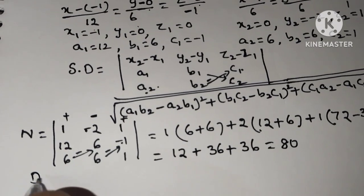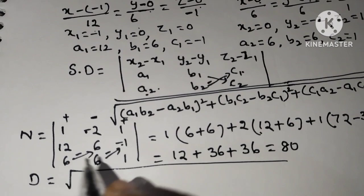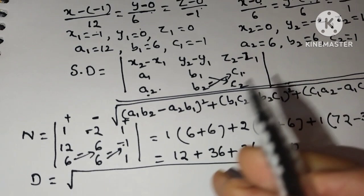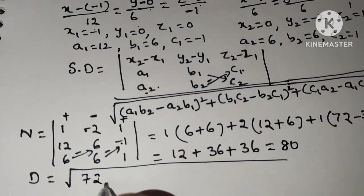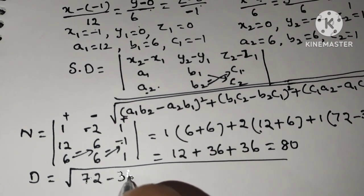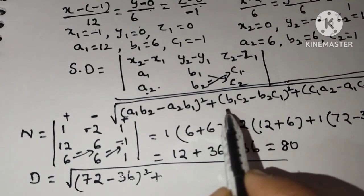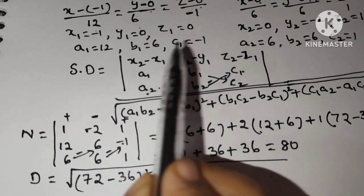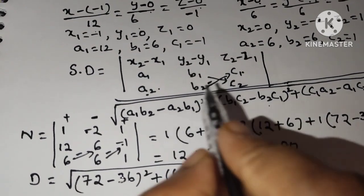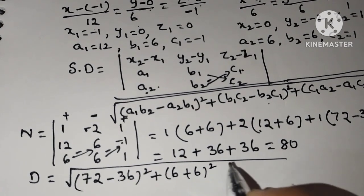Then find denominator. So denominator is a1 b2. a1 is 12 into b2, 6, is 72. Minus a2, 6, b1, 6, 6 is 36 whole square. Plus next is b1 c2. b1 6, c2 1, 6. Minus b2 c1. b2 is 6, c1 is minus 1. So minus, minus, plus, whole square. Plus next, c1 a2. c1 is minus 1, a2 minus 6, minus a1 c2. a1 is 12, c2 is 1, 12, whole square.